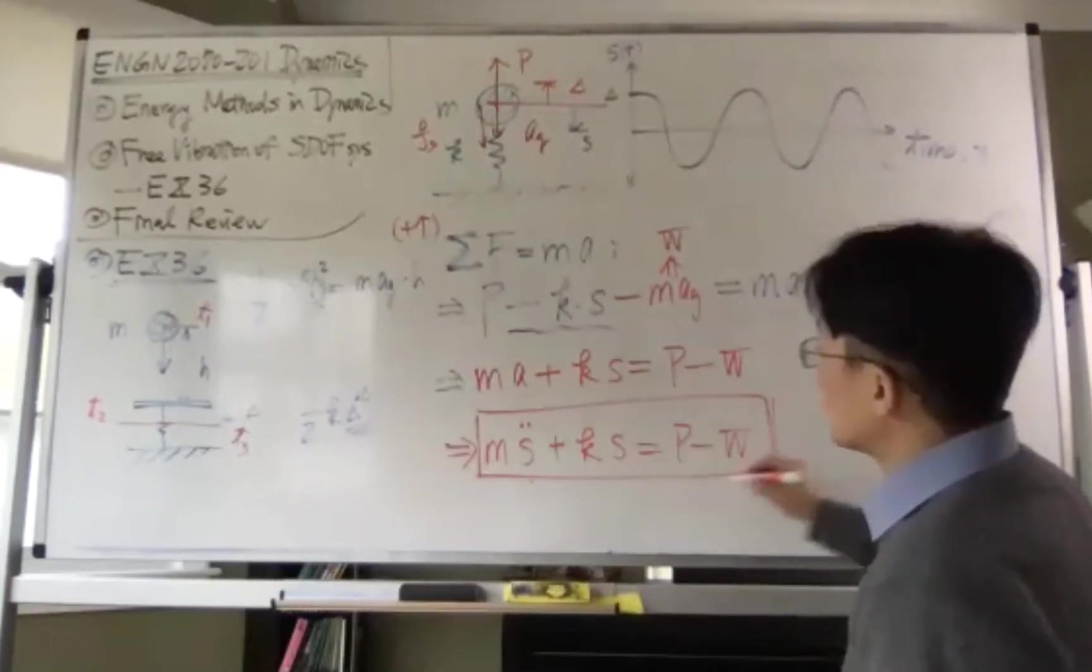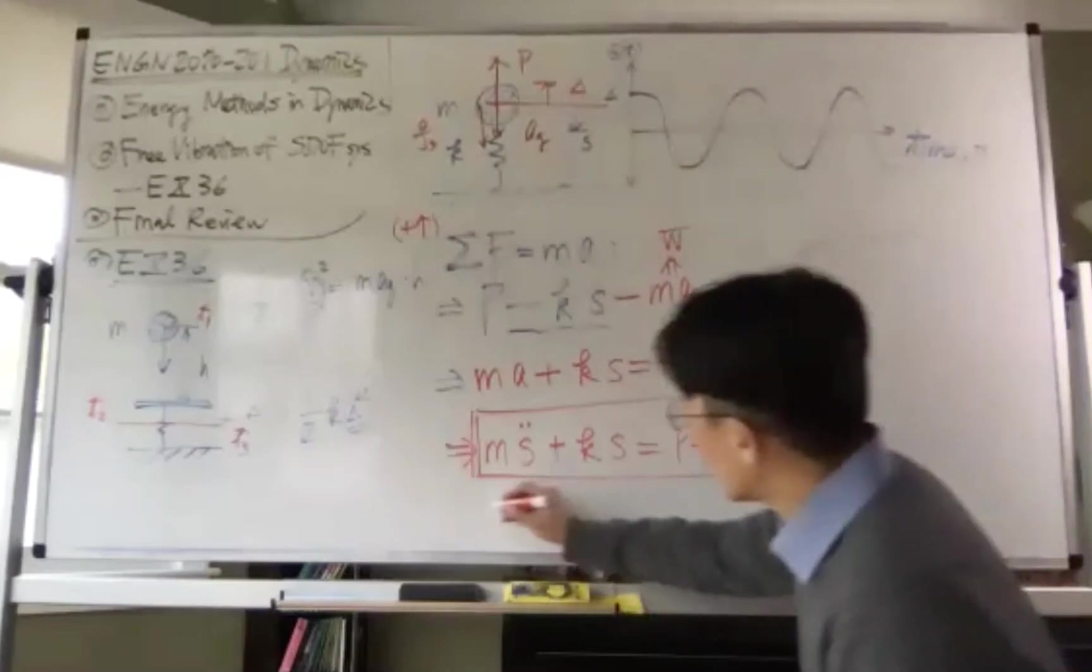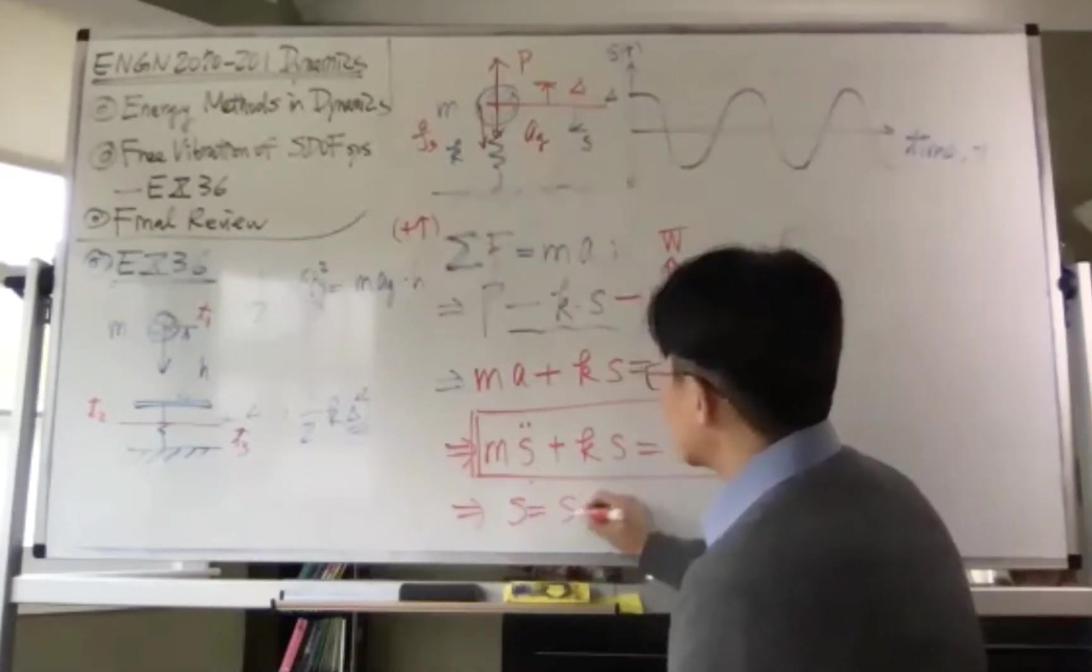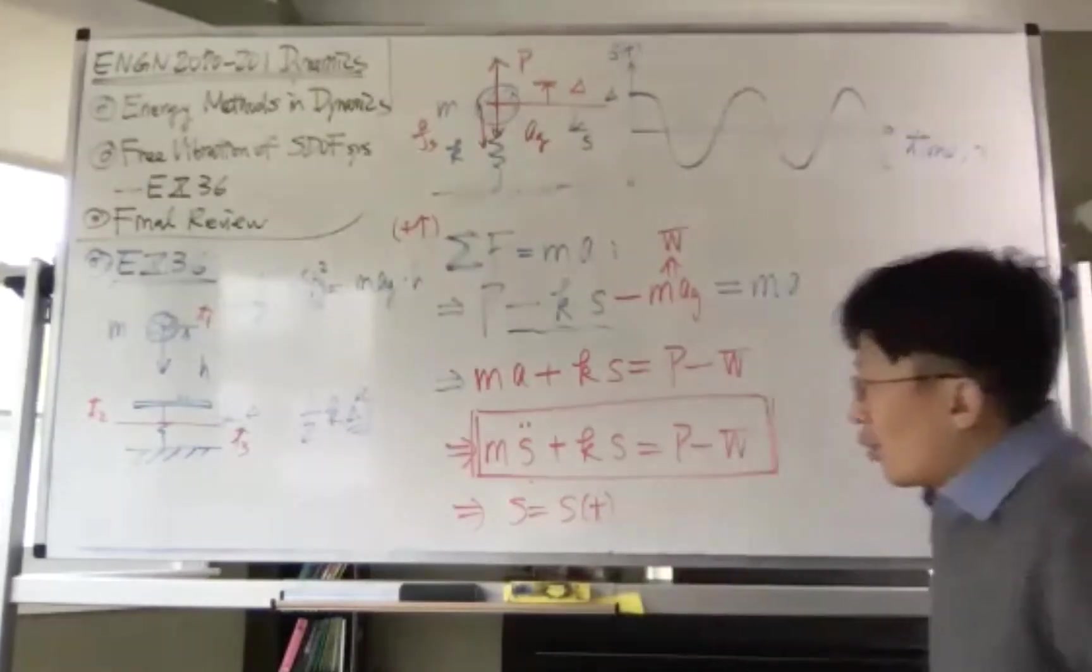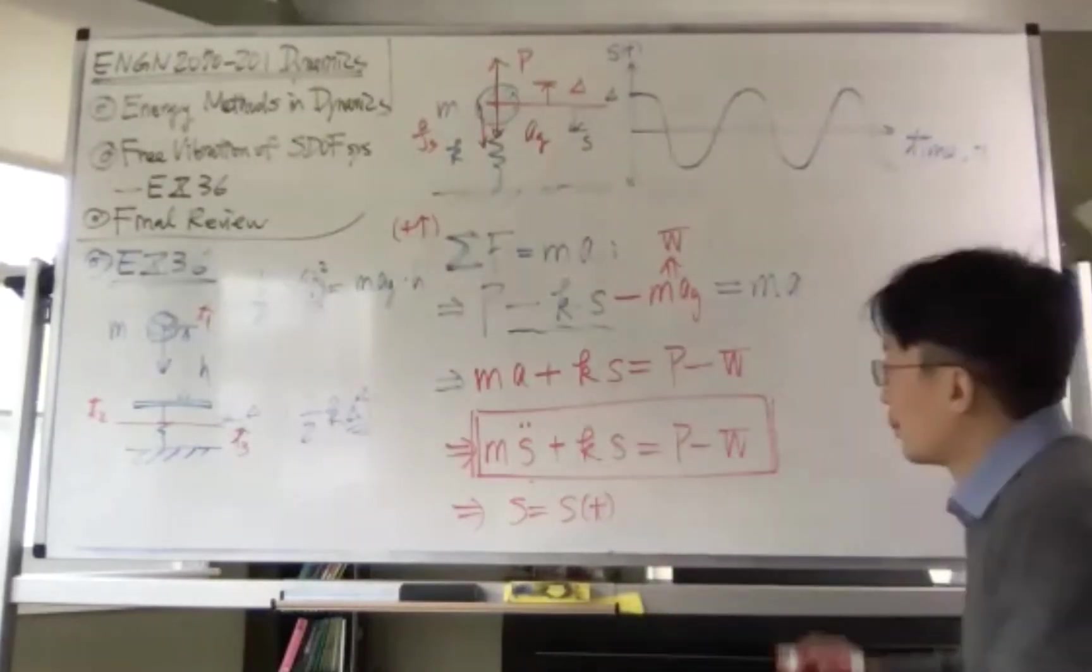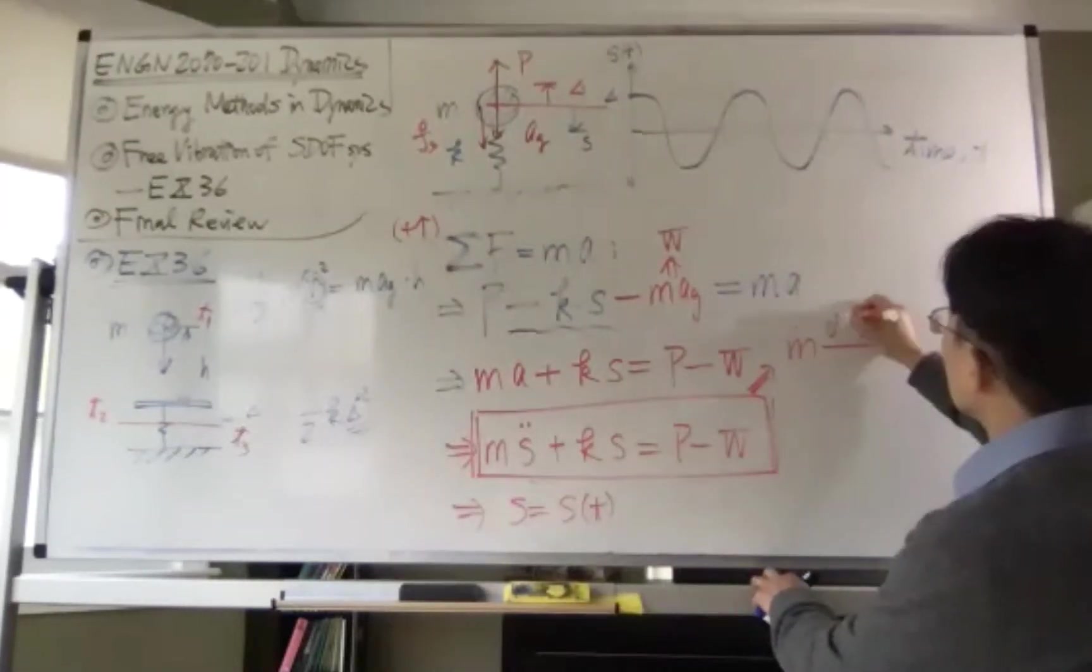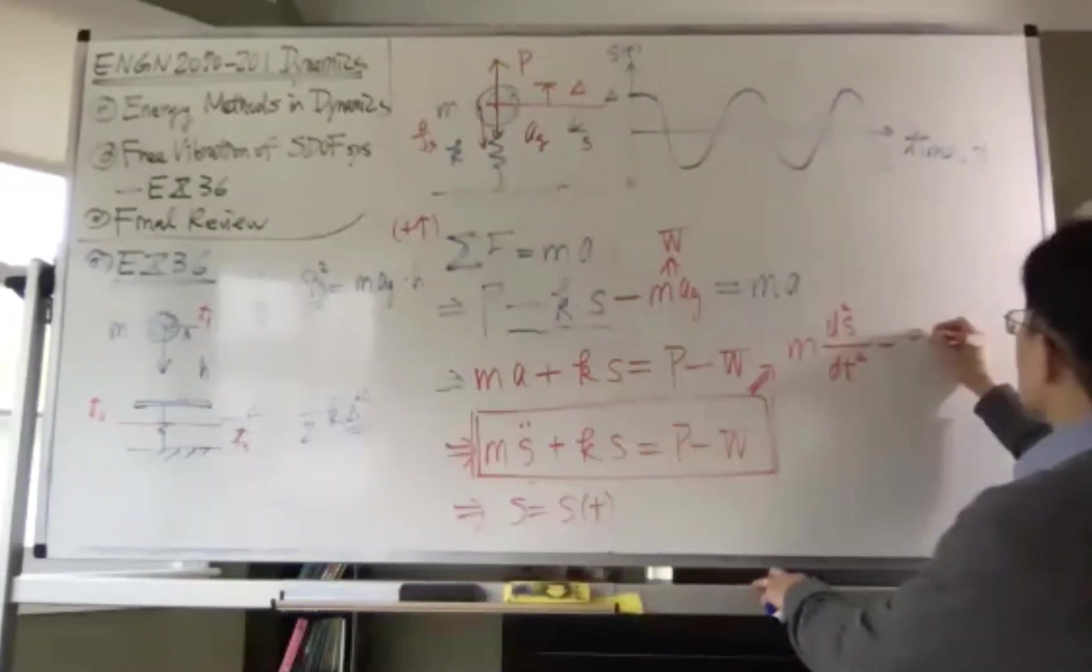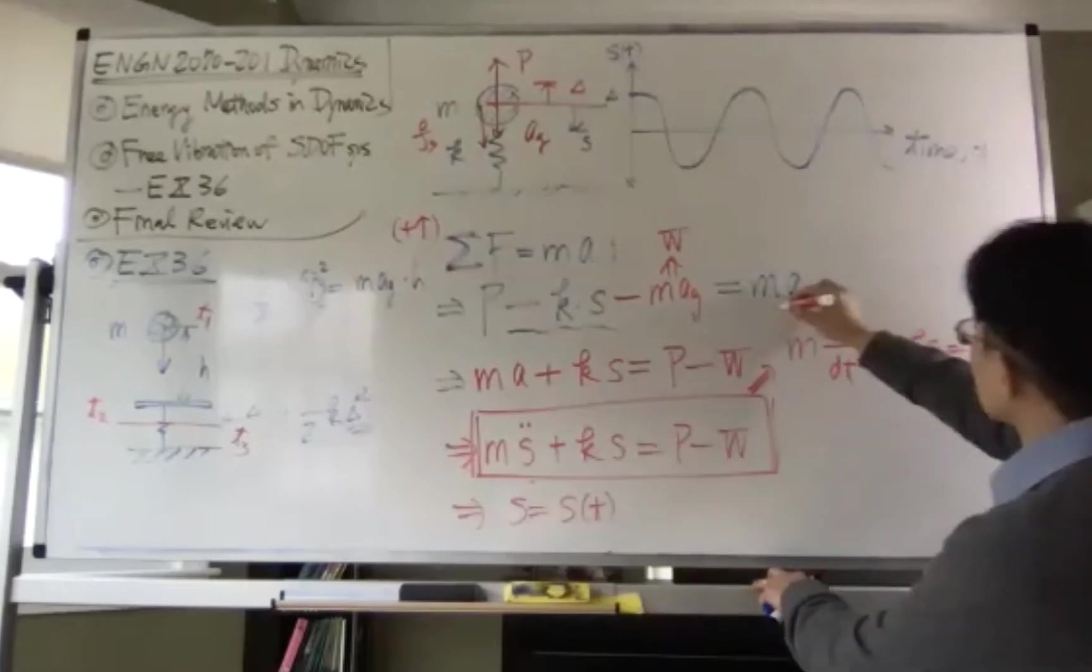That is one of the simple problems in structural dynamics that we're going to solve. Because here our objective is to find out the expression of S as a function of time. So what's this kind of problem? In fact, I put a double dot, but you should know that the double dot is nothing but just d²S/dt² plus K times S equals P minus W.